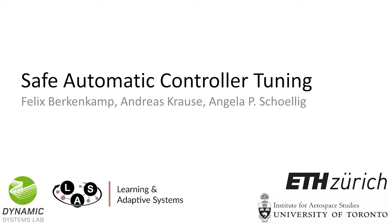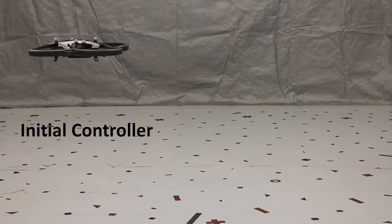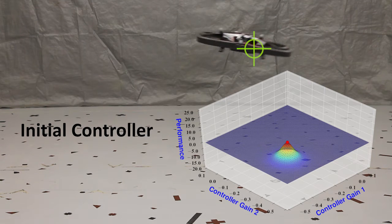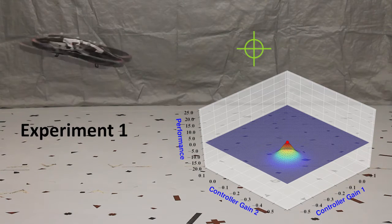We demonstrate an automatic controller tuning algorithm which safely optimizes controller parameters during operation. The goal is to maximize the controller's performance for a step input, such that the vehicle quickly comes to rest at a newly assigned location.